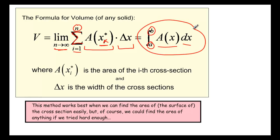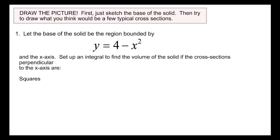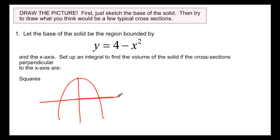Let's say we have the base of a solid which is the region between the parabola y = 4 minus x² and the x-axis. We want to set up an integral to find the volume of the solid if the cross sections perpendicular to the x-axis are squares. That means there is a 3D shape coming out of the screen where tracing around the bottom gives that region, and every slice cut perpendicular to the x-axis is shaped like a square — a little thickened square.